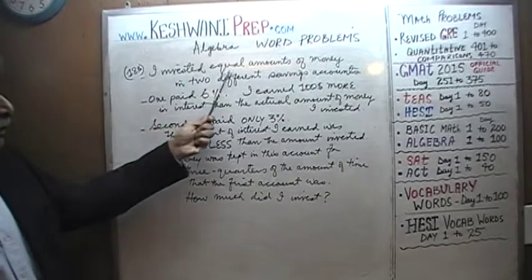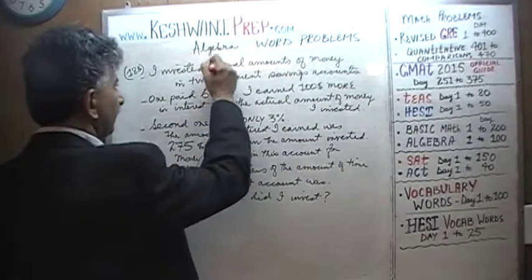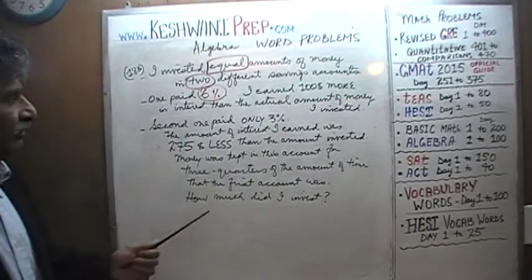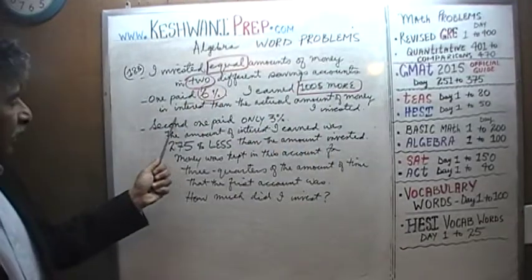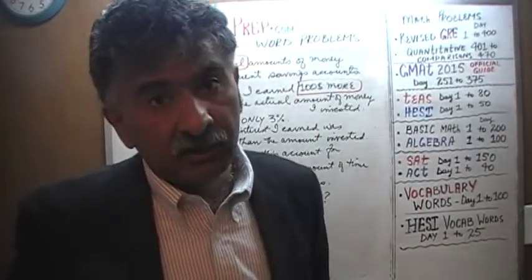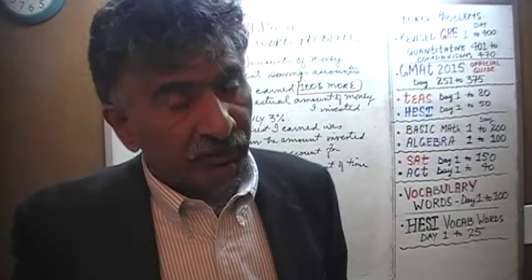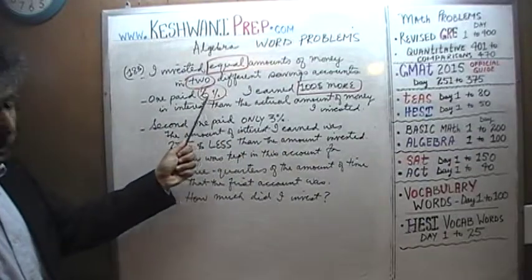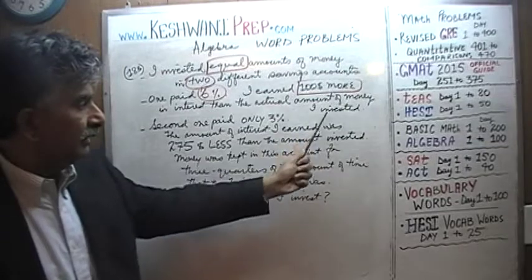It says: I invested equal amounts of money in two different savings accounts. One paid 6%, and in this account I earned $100 more in interest than the actual amount of money invested. For example, if I invested $300, it turned out that I earned $400 in interest. If I invested $900 in the account, the amount of interest I ended up earning in that account is actually $1,000 — $100 more than the actual amount of money that I invested.